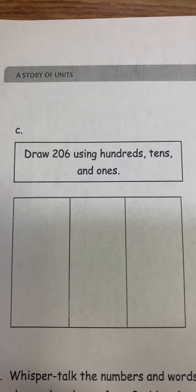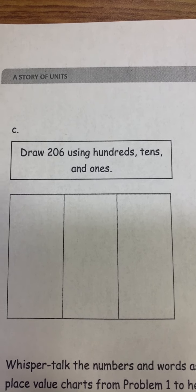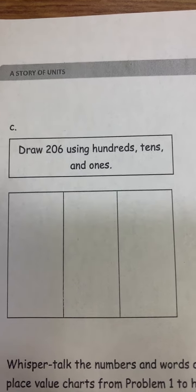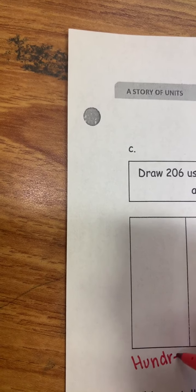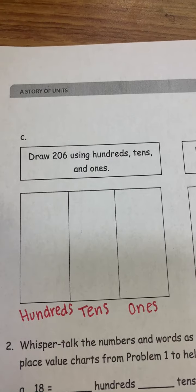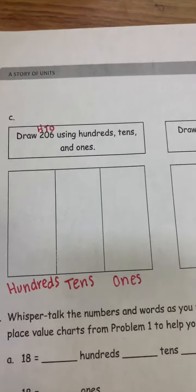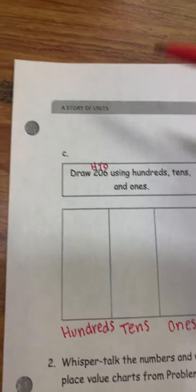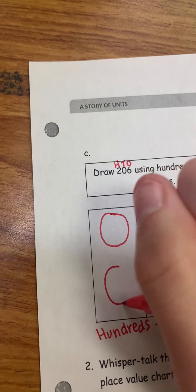So C is asking us to draw 206 using hundreds, tens, and ones. So let's go ahead and label. We have ones, tens, and hundreds here on our chart, and we can do the same up here. For our hundreds, we have two. So we can draw one, two, and label both of these 100.